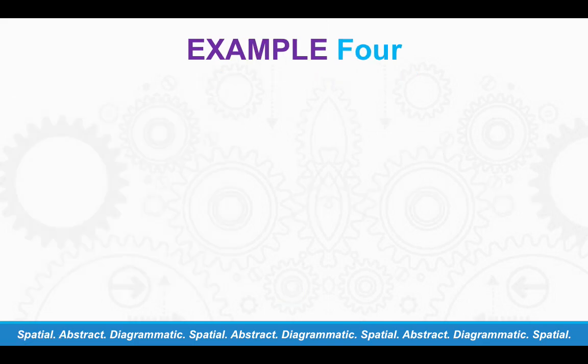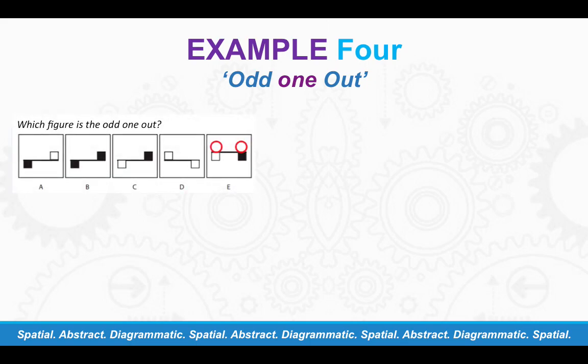Example four, we have odd one out. So here we have which figure is the odd one out. So for these questions, anything could be changing in the sequence. And you need to work out what's changing. So this could be the colours, or it's been reflected or rotated, or they've slightly moved or altered in some way. So anything could be changing. So you've got to look out really carefully. And these red circles here indicate what is actually missing.